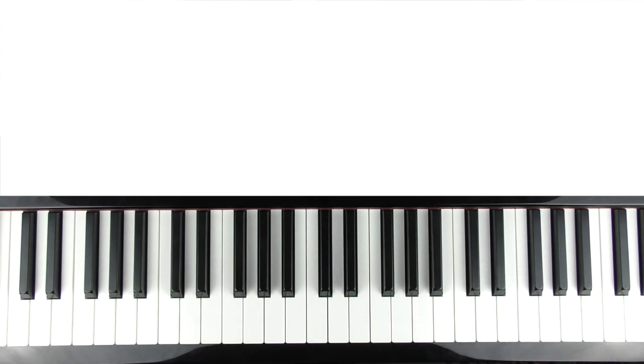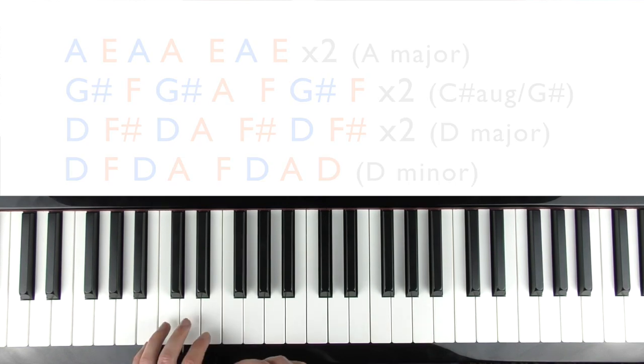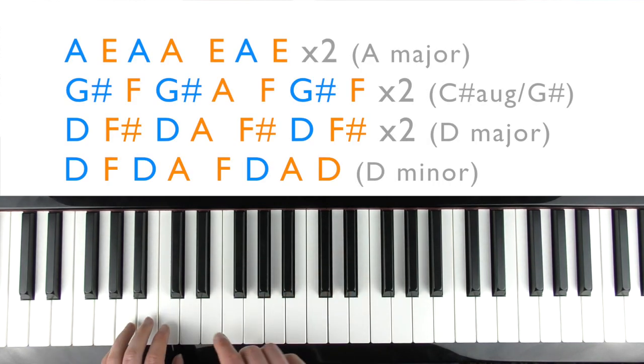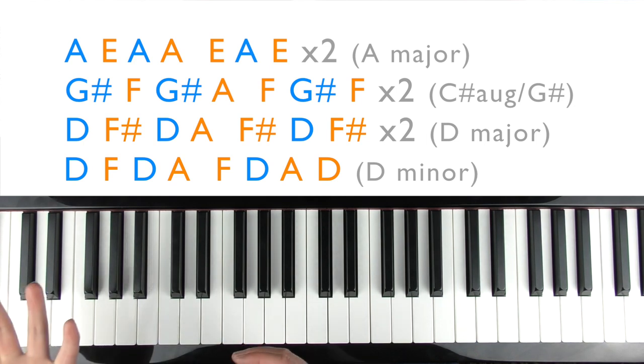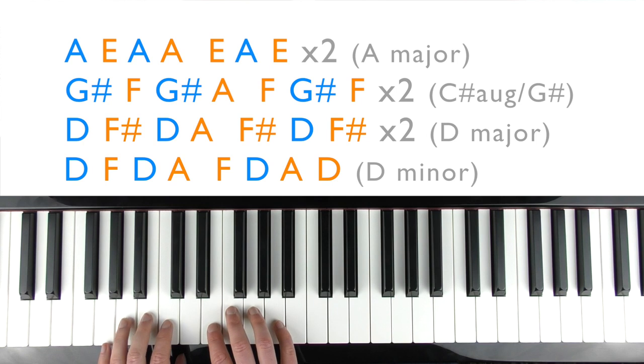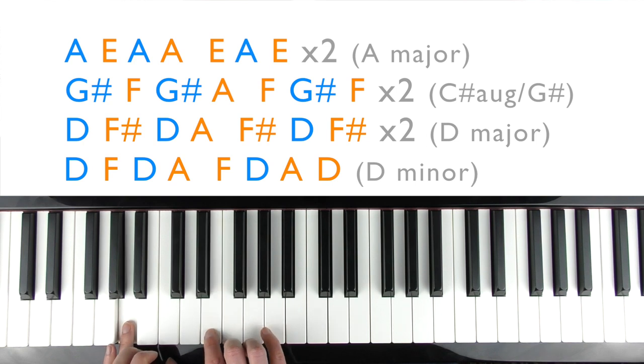Now let's have a look at the verse. This again this is middle C we're going to be playing below here. So I've put the notes on the screen. So I've color coded the hands as well. So left hand is blue, right hand is orange. So we're going to go A, E, A, A, A, E, A, E. Do that again.